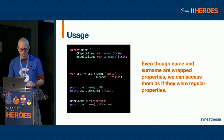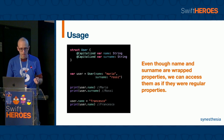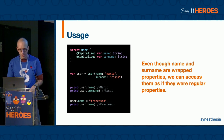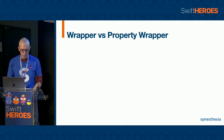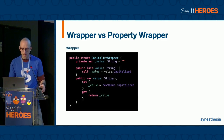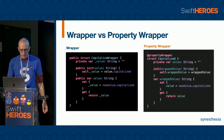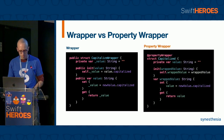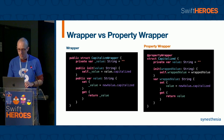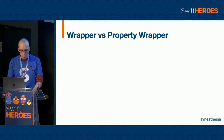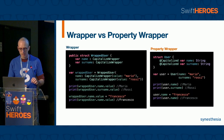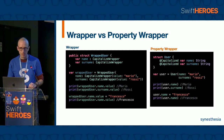Even though name and surname are wrapper properties, we can access them as if they were regular properties. This is the biggest advantage of using a property wrapper. We can have evidence of that if we compare a normal wrapper with a property wrapper. The implementation is pretty much the same, but if we take a look at their usage, we can see that with a property wrapper the syntax is cleaner and access and assignment of properties are more natural.